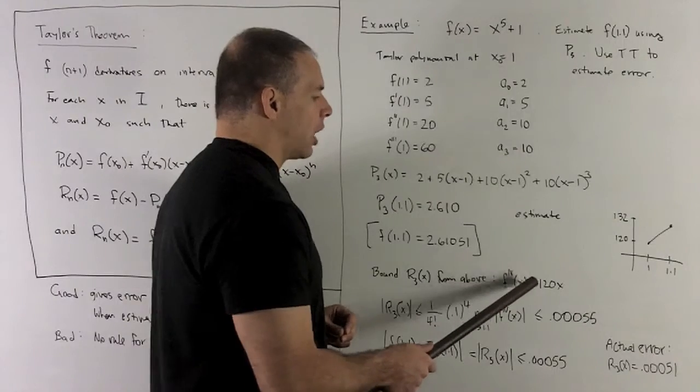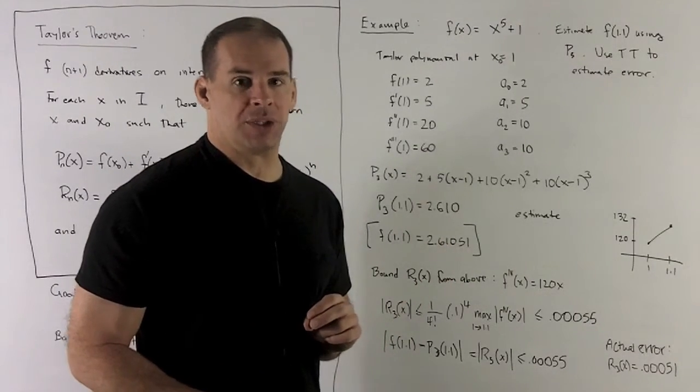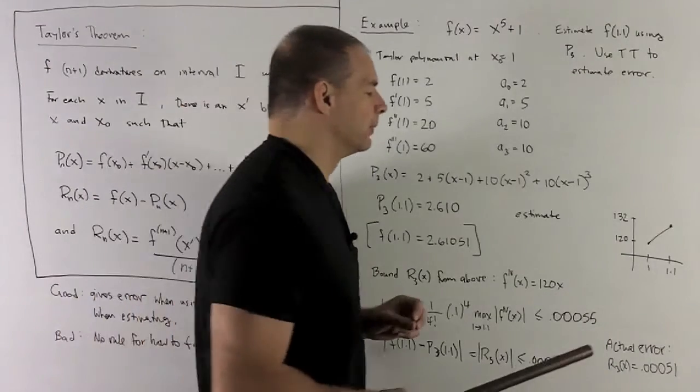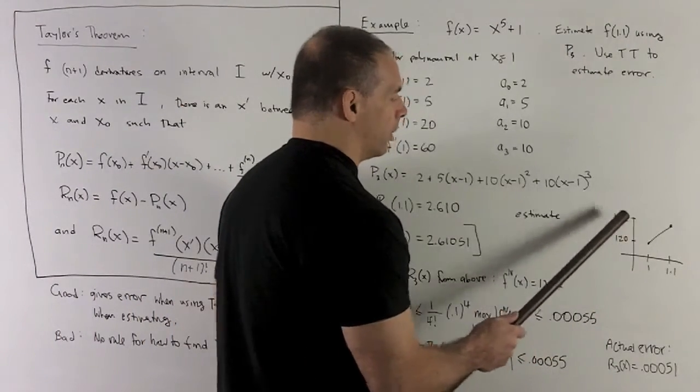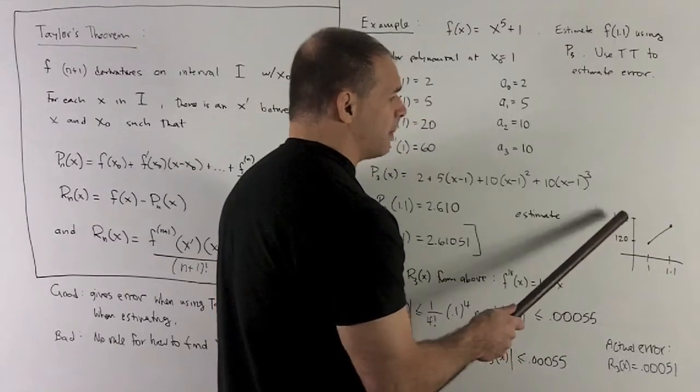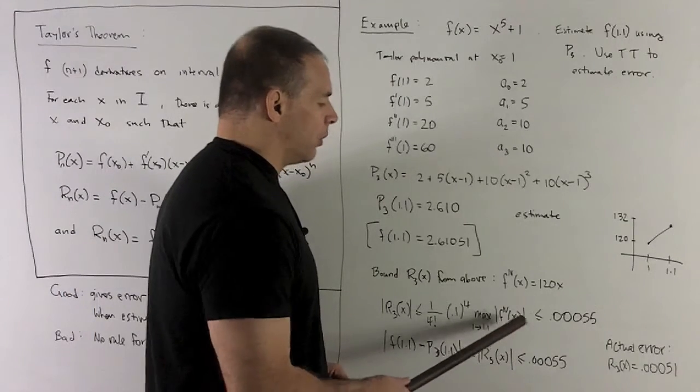I get the maximum. I'm going to take the fourth derivative. It's 120x. We'll graph it, and then we'll see what the max is over our region from 1 to 1.1. So, if I plot the two points, I'm going to have 120, 132. Then, we connect the dots. And then, we see that the max here is going to be 132. So, I'm going to put that in there.